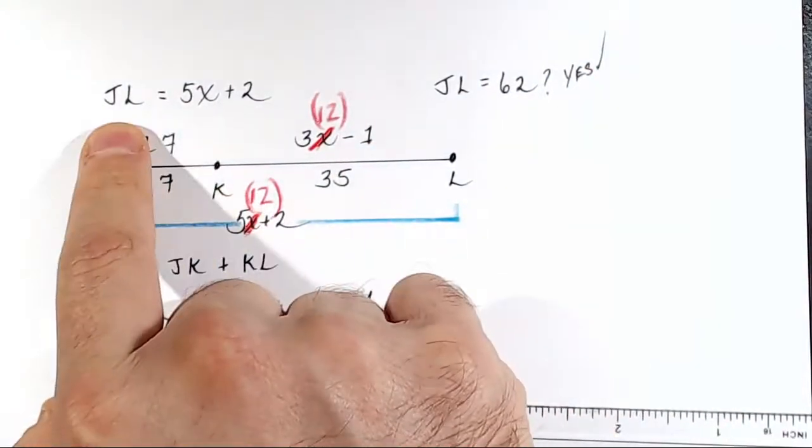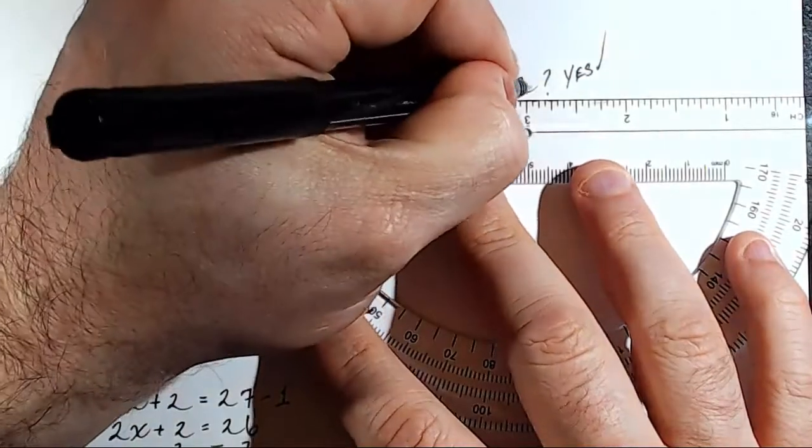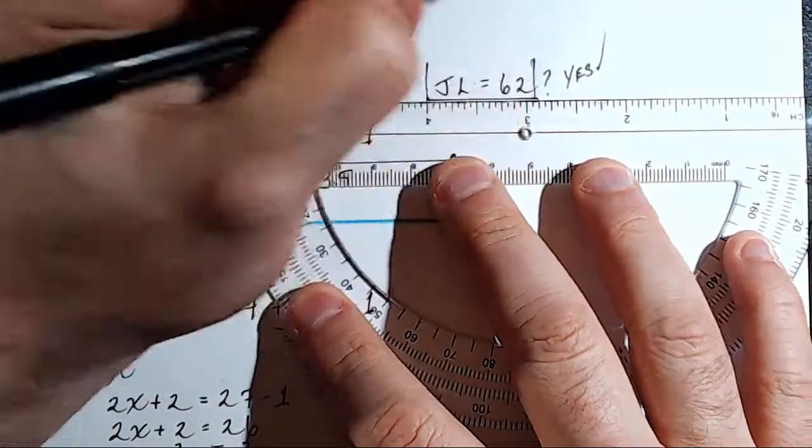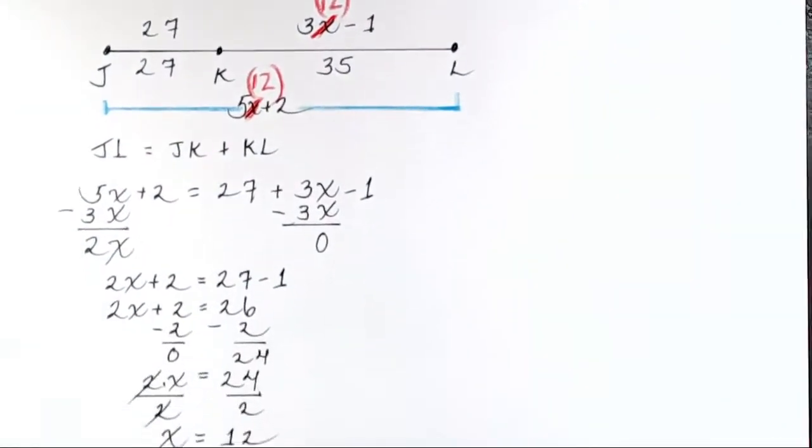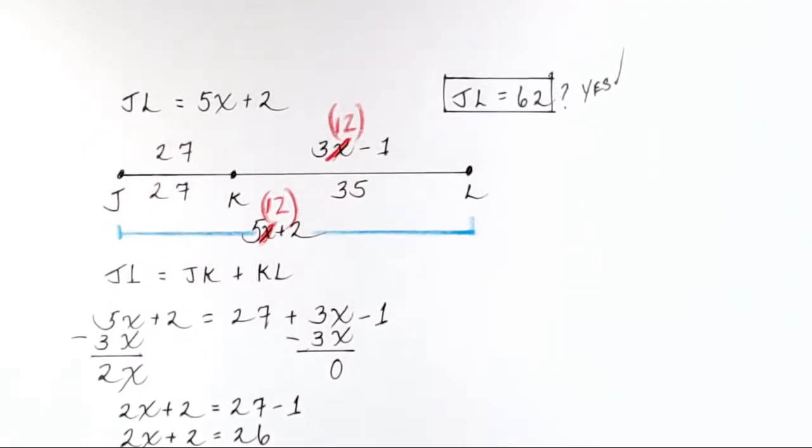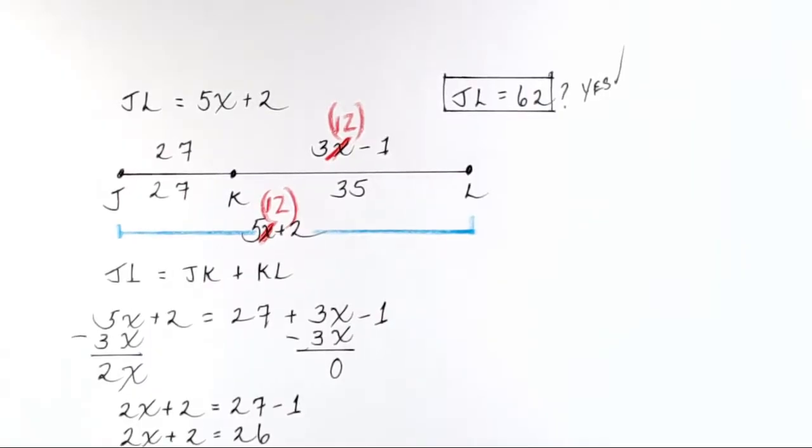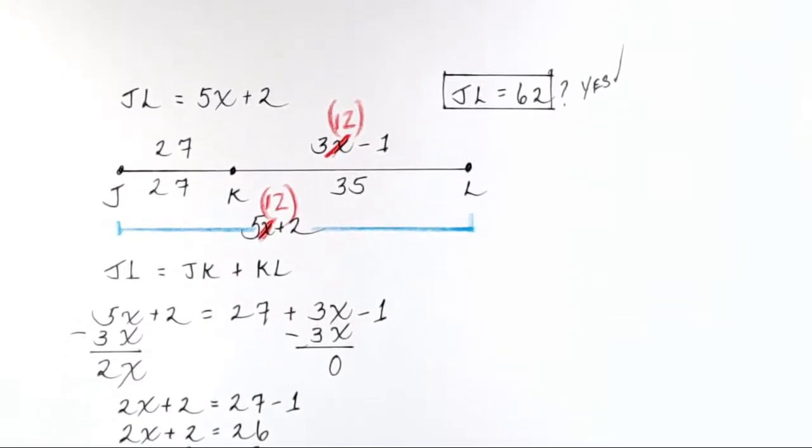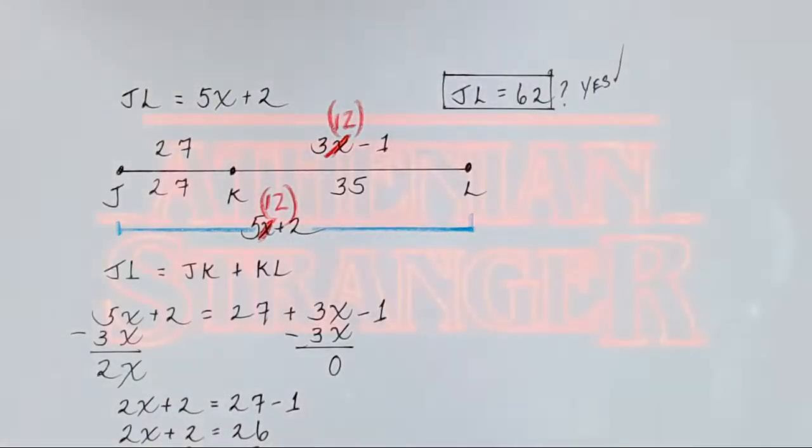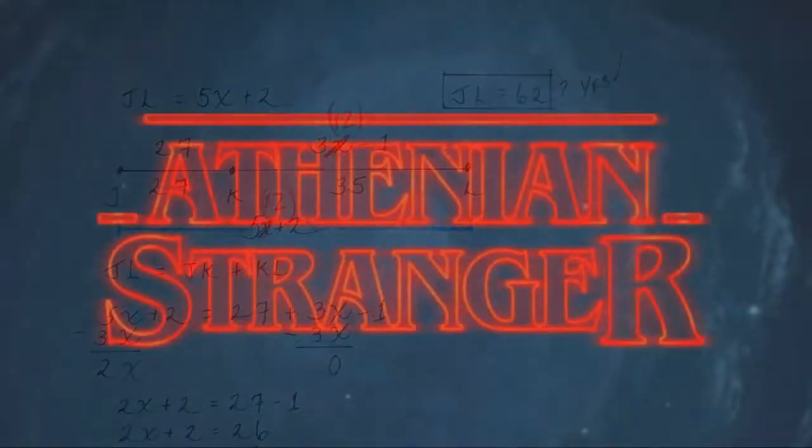So they wanted to know what JL was, and we found it. JL is 62. Easy peasy. All right. So that was the whole problem. Not too bad. If this video is useful to you, please like the video and leave a comment if you have a question. If you have not already, please subscribe to the channel so you are alerted to new videos. Thank you.